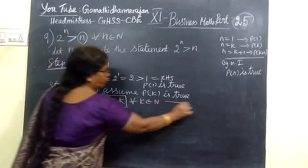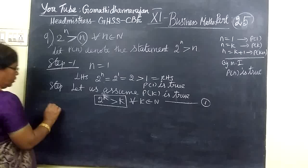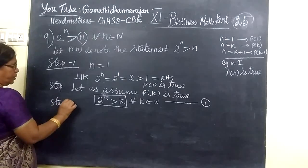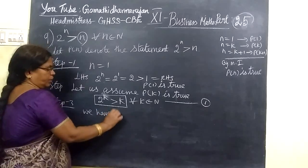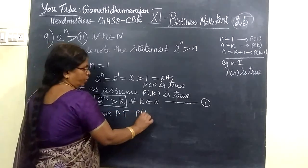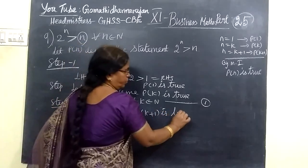You want it as 1. And now you write step 3. We have to prove that we have P of K plus 1 is true.